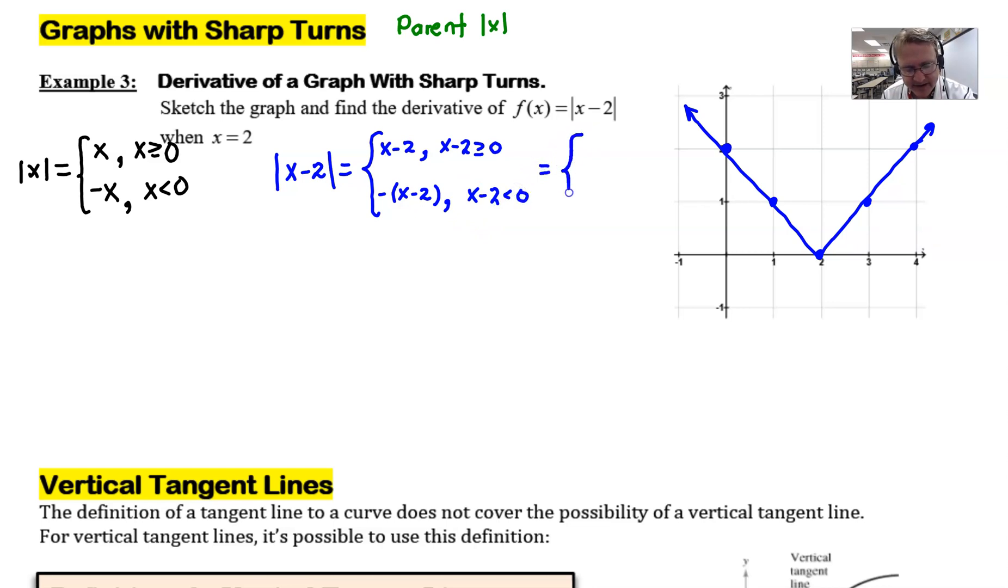So the absolute value of x minus 2 is x minus 2 as long as x minus 2 is greater than or equal to 0. On the other hand, we might have the opposite, negative (x minus 2), if x minus 2 were less than 0. This can be simplified just a little bit by way of solving for x in our little restrictions here. We would have x minus 2 when x is greater than or equal to 2, and then if I distribute the negative, we have negative x plus 2, and that's true when x is less than 2.